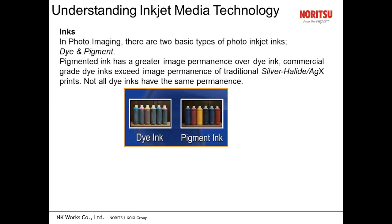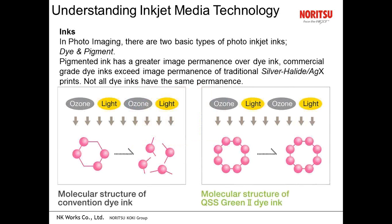In photo imaging we have two types of ink: dye ink and pigment ink. Dye is a colored liquid — translucent — whereas pigment ink is a floating particle in a solvent and is opaque. Dye inks do not have as good image permanence as pigment inks when exposed to light. There is no doubt that pigment inks are the best technology for print permanence.